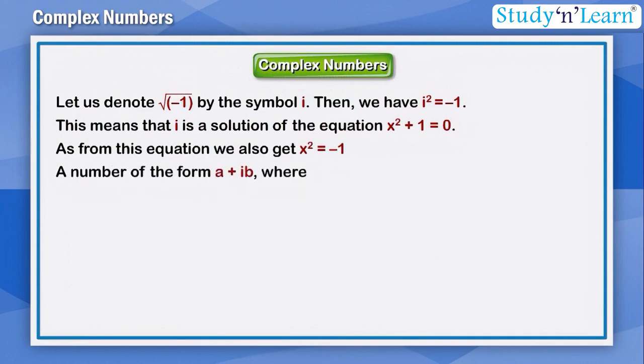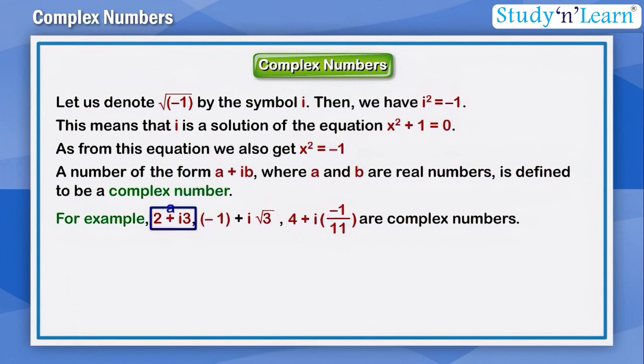A number of the form a + ib, where a and b are real numbers, is defined to be a complex number. For example, 2 + i3, -1 + i√3, 4 + i(-1/11) are complex numbers.